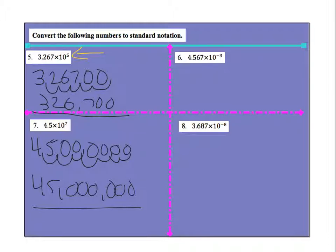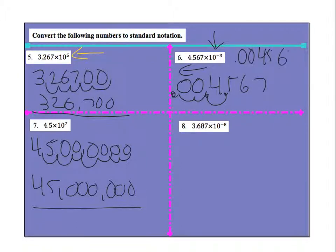For 6 and 8, remember this is a negative so that means I'm going to go left. So I go 4, 5, 6, 7, but then I'm going to go this way. So I'm going to go 1, 2, 3. So my answer is actually going to be 0.004567.